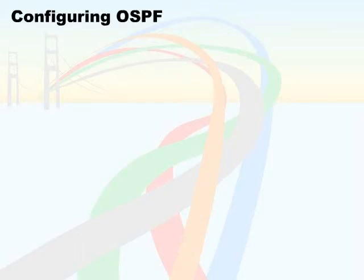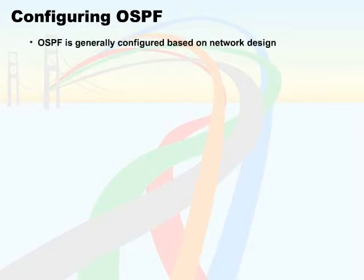Now that we've seen these three core features of OSPF functionality, let's look at how to configure it in a network. OSPF is generally configured on the basis of the design that has been chosen for the network. Here we'll explore the basic steps required to configure OSPF.